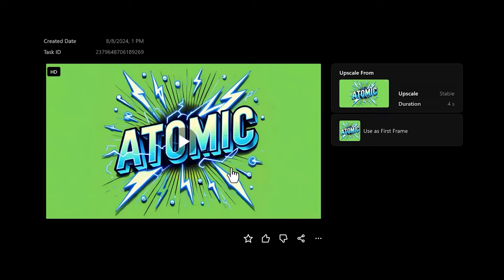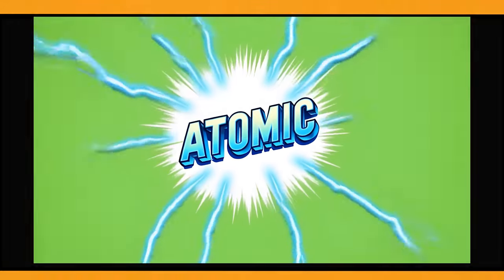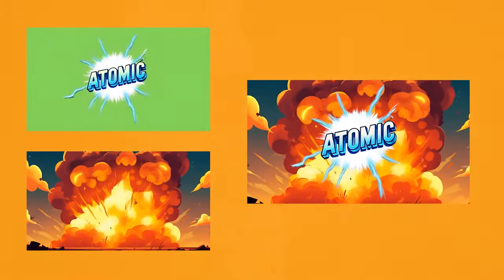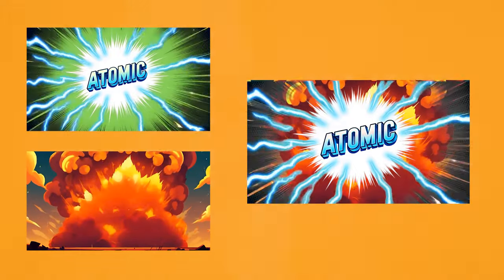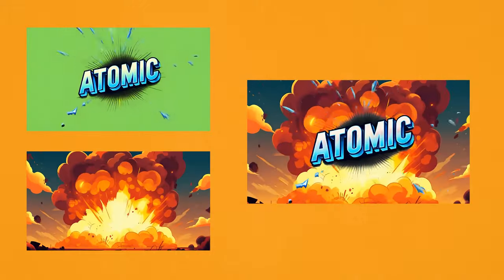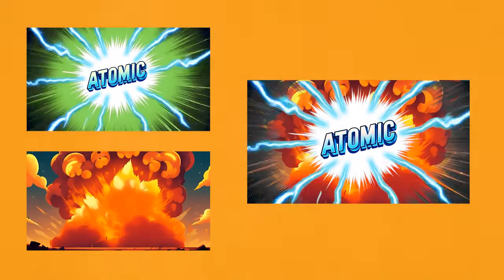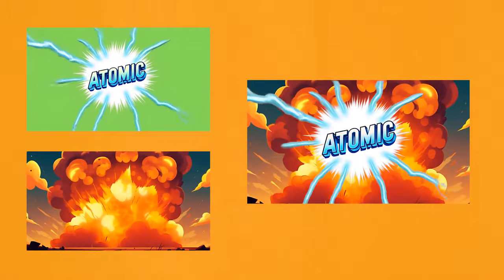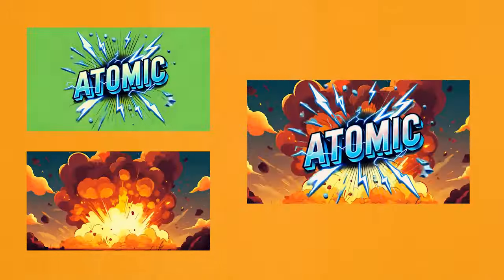Here's another example: I took a logo I created called Atomic and put a green screen background on it so you could put any background on it. It created this video, which looks awesome. You can use the same effect I used before to change the background. So make sure to play around with creating text in Vidoo as well.